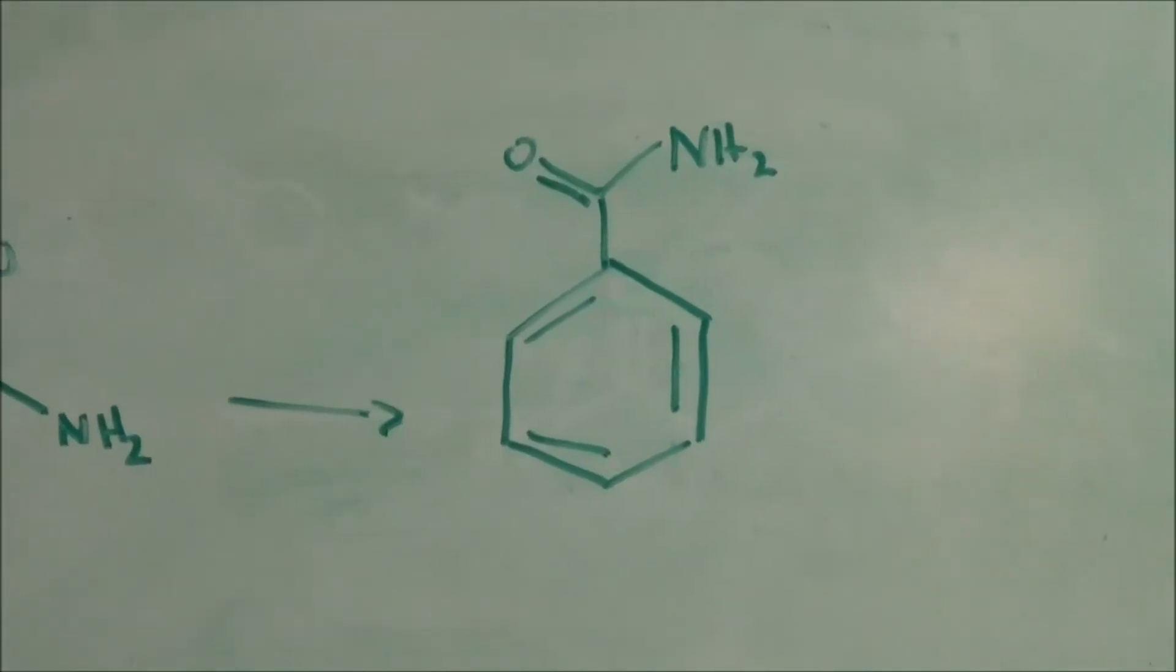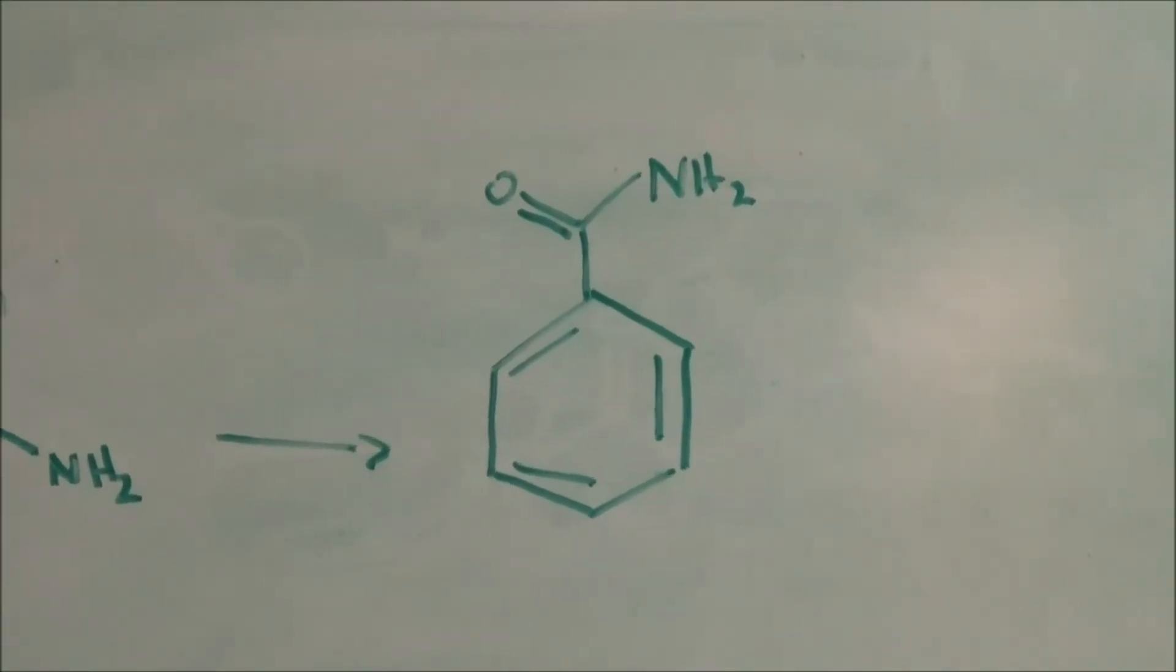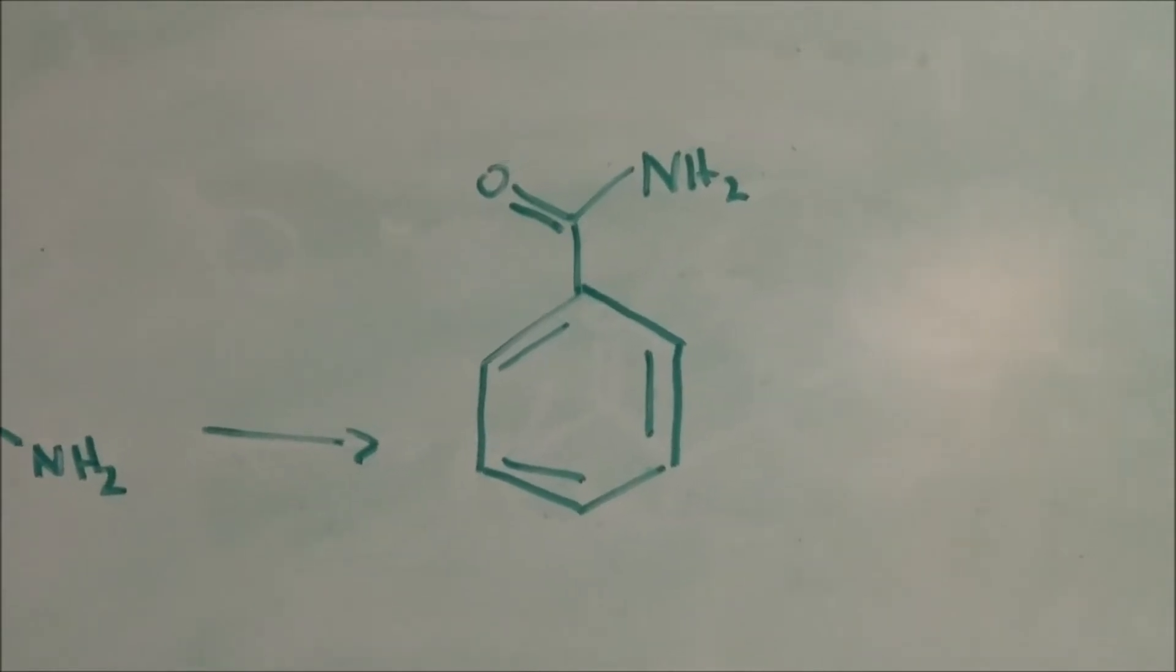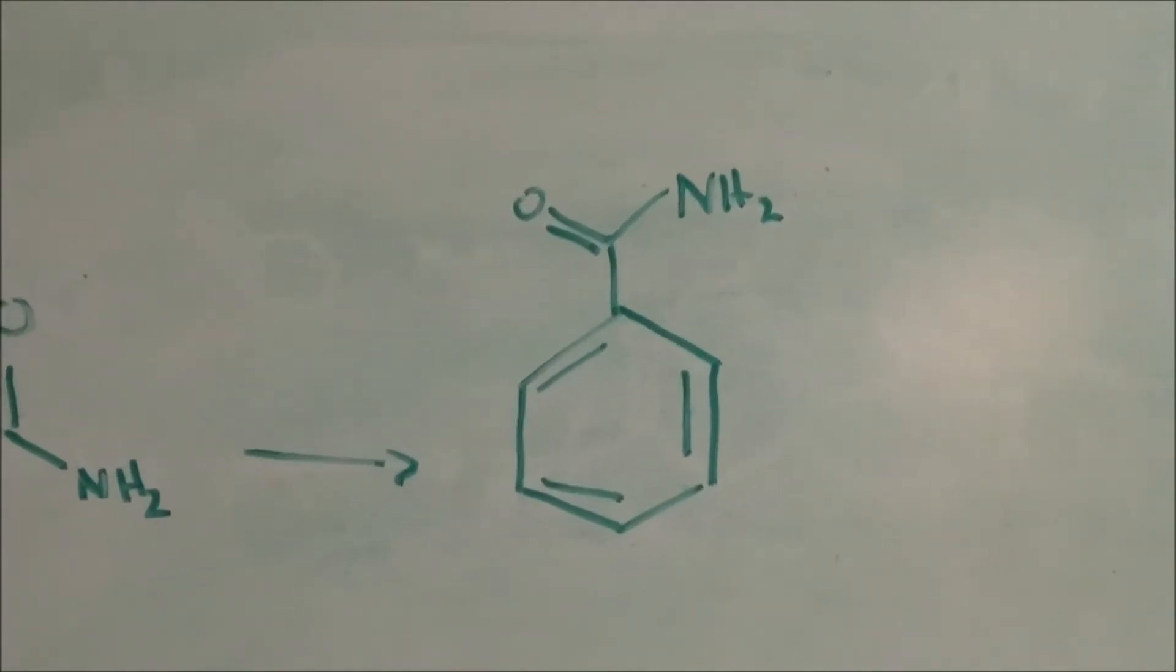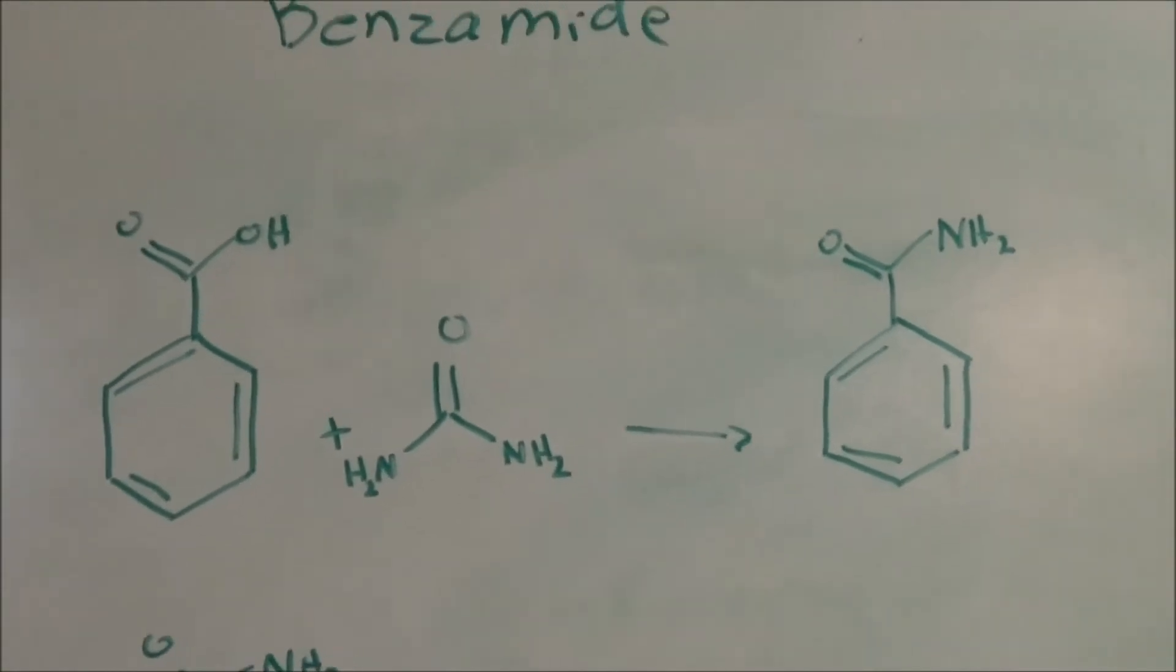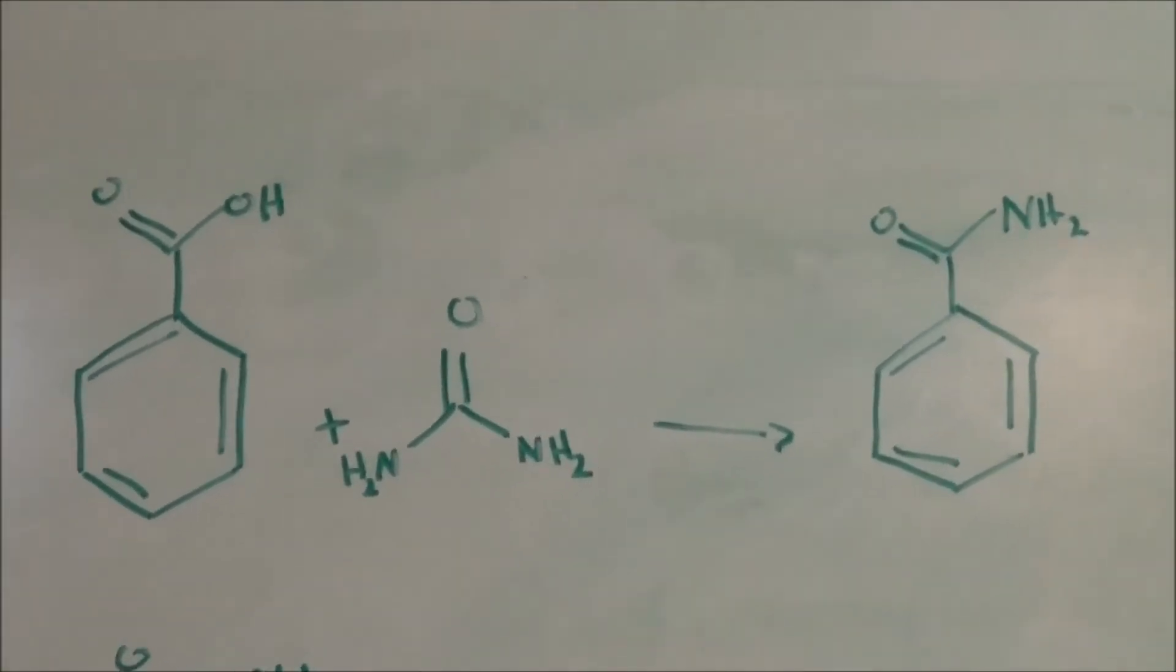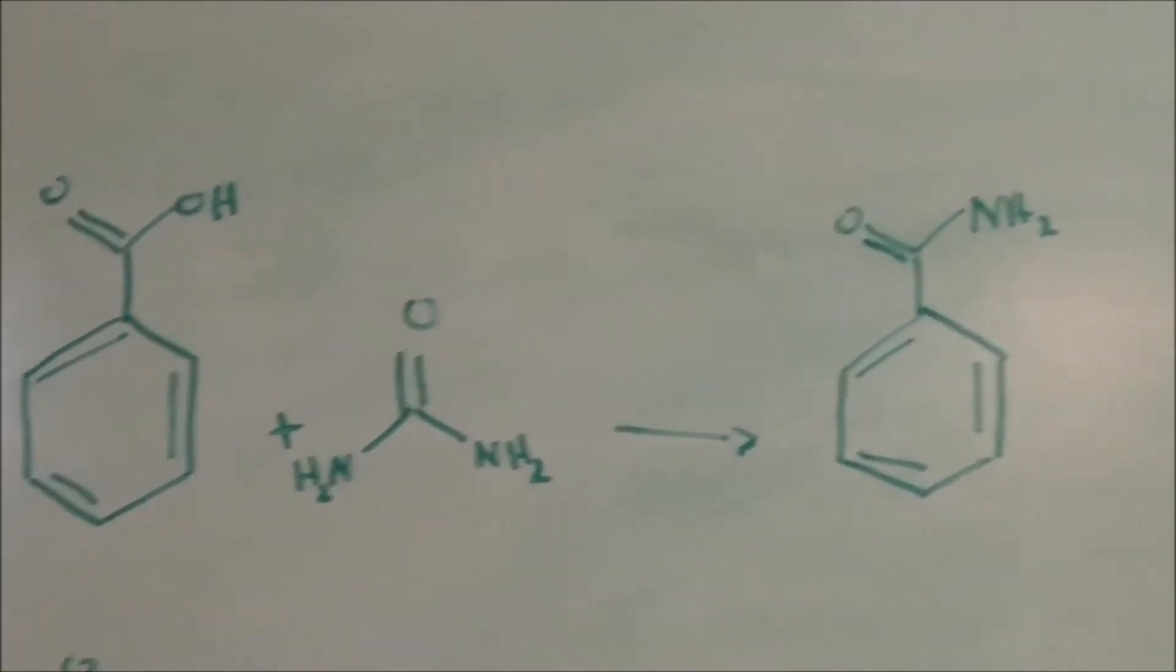Benzamide has been prepared from esters of benzoic acid and ammonia, as well as the reaction of benzoyl chloride with ammonia, but today I'll react benzoic acid and urea with a boric acid catalyst to make benzamide.